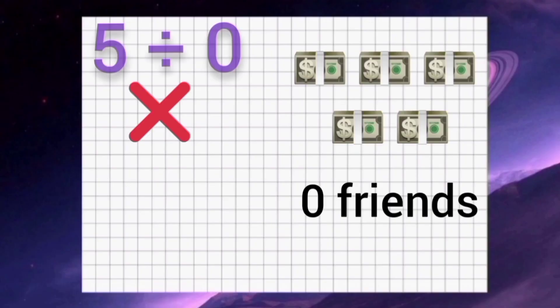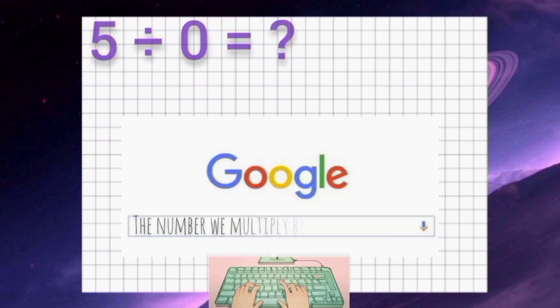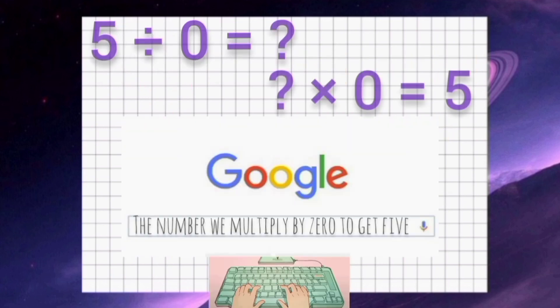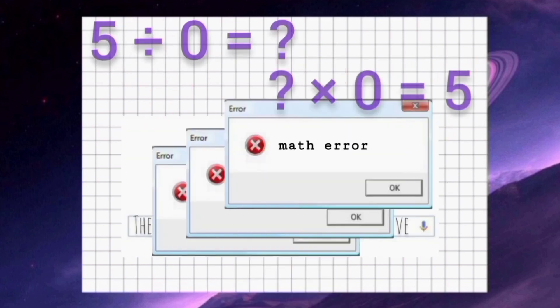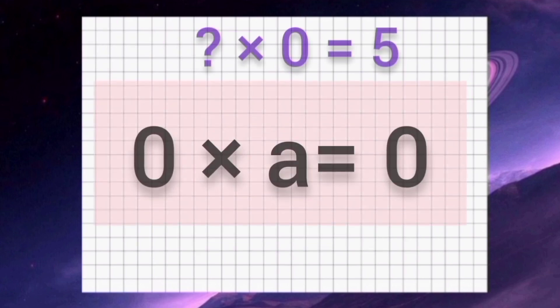Mathematically speaking, five divided by zero has no sense, because when we search for the number we multiply by zero to get five, we can't find it — because zero multiplied by any number equals zero. Here is a little experiment for you to try on your calculator.